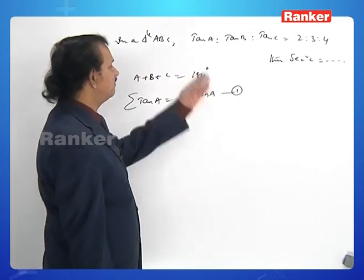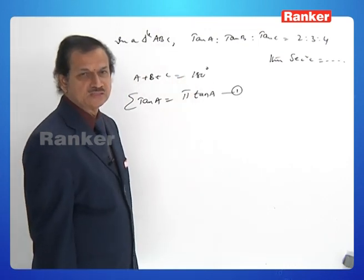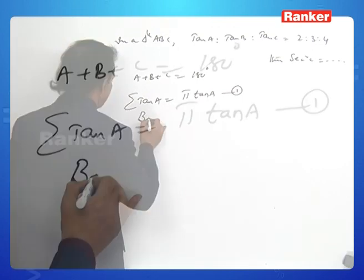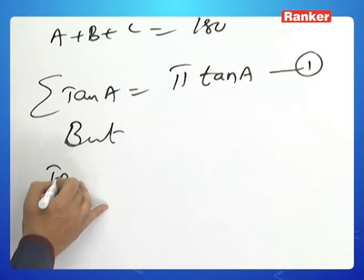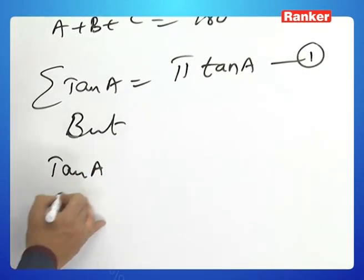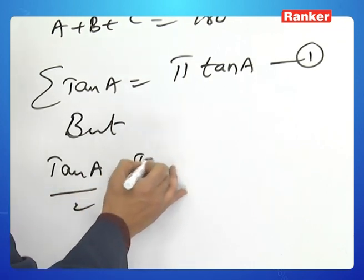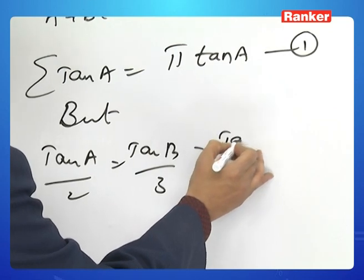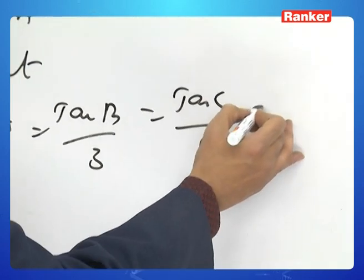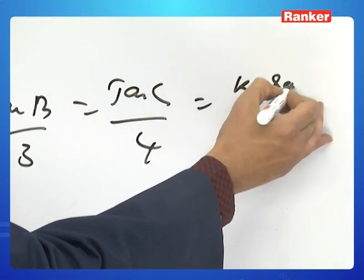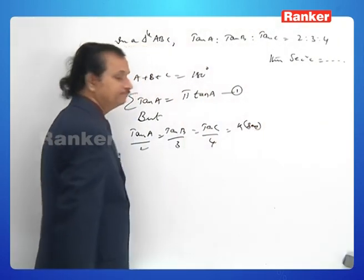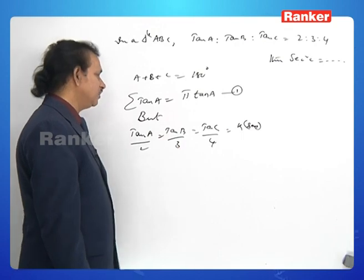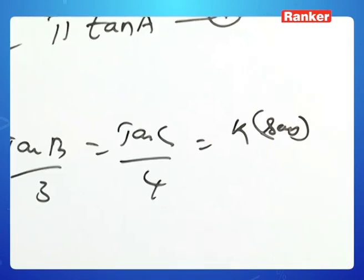Some information is given about tan A, tan B, tan C. We set tan A / 2 = tan B / 3 = tan C / 4 = k. So tan A = 2k, tan B = 3k, tan C = 4k.